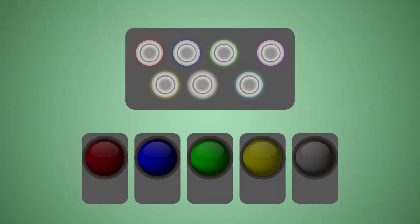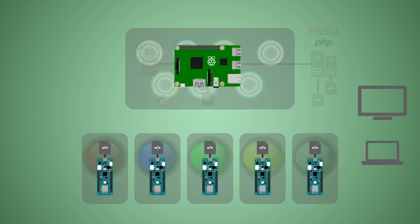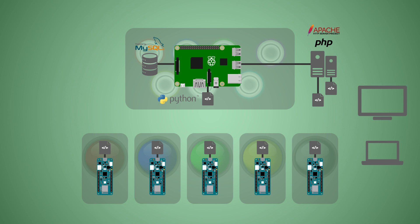Looking back at the block diagram from the previous video, the Python script is now not only controlling the buttons and LEDs on the Raspberry Pi, but it's also connected directly to the MySQL database running on the Raspberry Pi and it also starts the WebSocket server. Each of the Arduinos will then connect to that WebSocket server to do all of its communications.